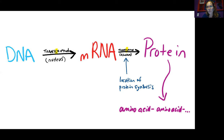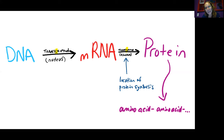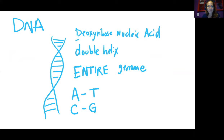Transcription, remember, is converting DNA to mRNA, so this is occurring in the nucleus. Whereas translation is taking the information from the mRNA, turning it into an amino acid sequence, which is our protein. And so that is happening at the ribosome.